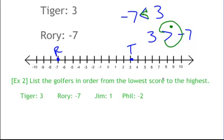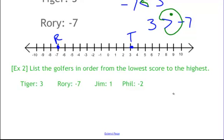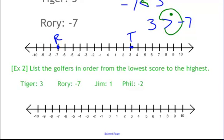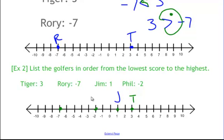Now let's list the golfers in order from lowest score to highest score. We have Tiger at 3, Rory at negative 7, Jim at 1, and Phil at negative 2. Making a number line makes it really easy. From least to greatest — lowest to highest — we go from left to right: negative 7, negative 2, 1, and 3. On a number line, left is the lowest and right is the highest.